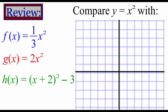So just a quick review on graphing some different quadratic things. We're going to compare four different graphs: our parent function x squared, then multiply it by one-third to see what that does, then multiply by 2, and then there's x plus 2 squared minus 3 where there's a couple of things going on. I'm actually going to graph these out on my calculator to make it a little bit easier to look at.